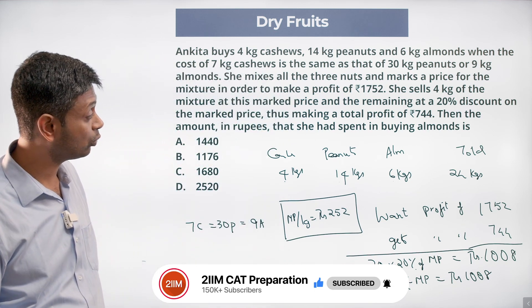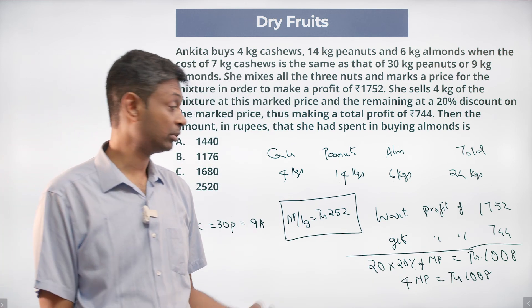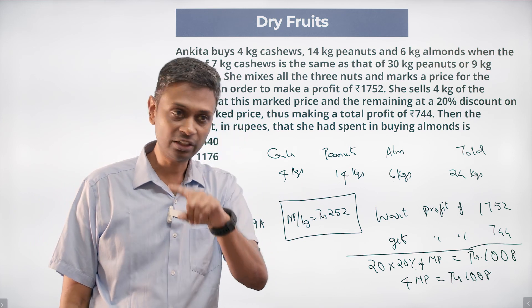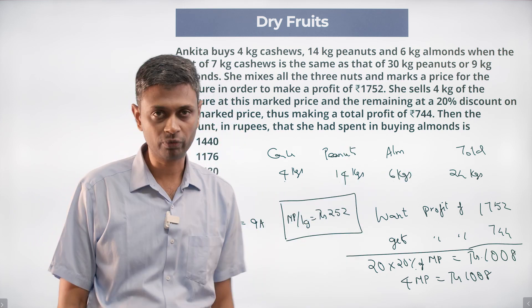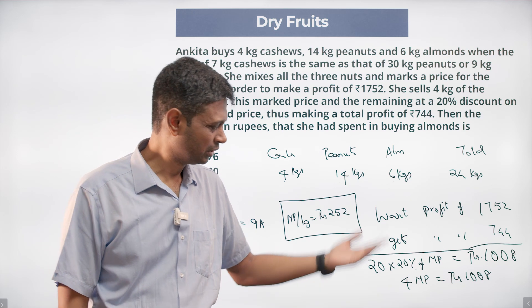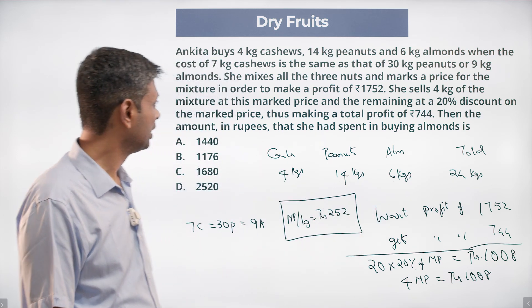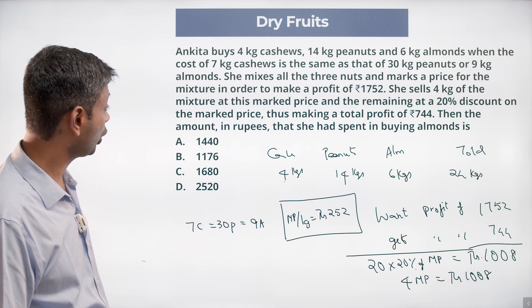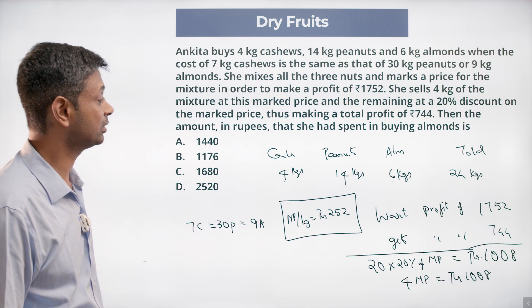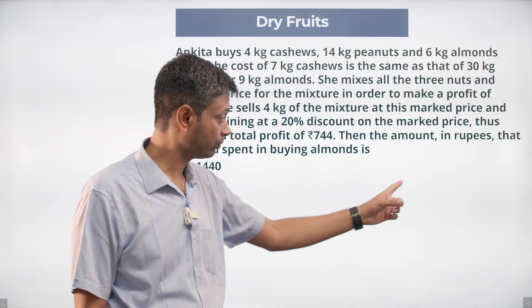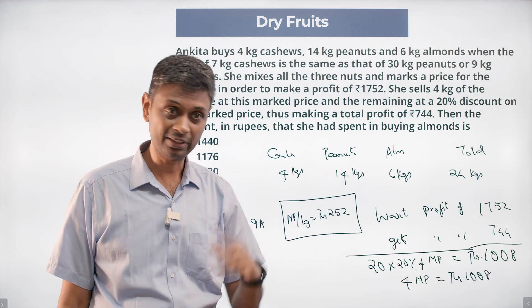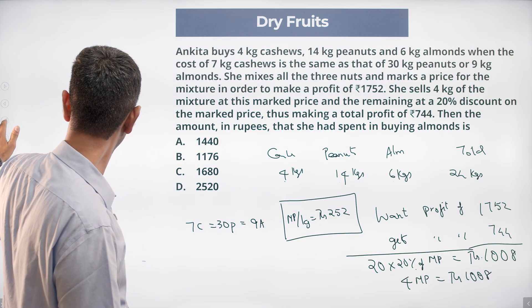She's selling 24 kilograms at this price. If she had done it, she would have got 1752 as profit. She's not able to, she discounts and sells this and therefore makes 744. Now what do we need to find? The amount in rupees that she had spent in buying almonds. To find this, I think we'll have to use this.